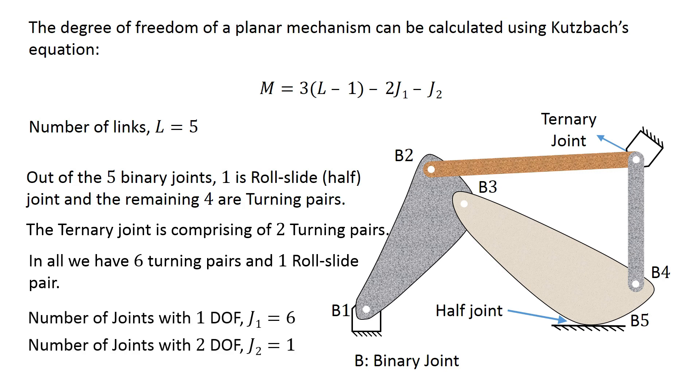Therefore, the number of joints with 1 degree of freedom equals 6 and the number of joints with 2 degrees of freedom equals 1. Keeping the required values in Kutzbach's equation, we get the degree of freedom equals negative 1.